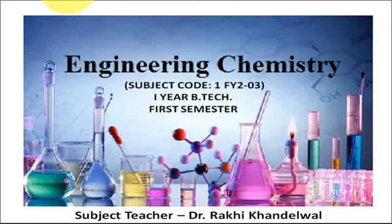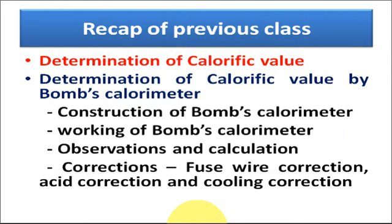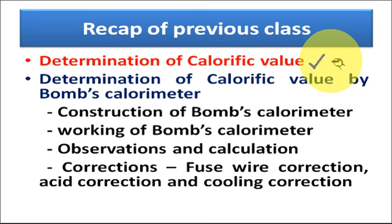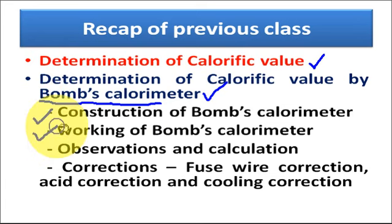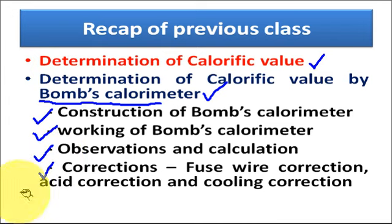Welcome again to the engineering chemistry course. Before starting today's class, let's recap the previous class. In the last class, we discussed the determination of calorific value — by experimental methods using bomb calorimeter and Junkers calorimeter, and by the theoretical method using Dulong's formula. We covered the bomb calorimeter in detail: its construction, working, observations, calculations, and corrections.